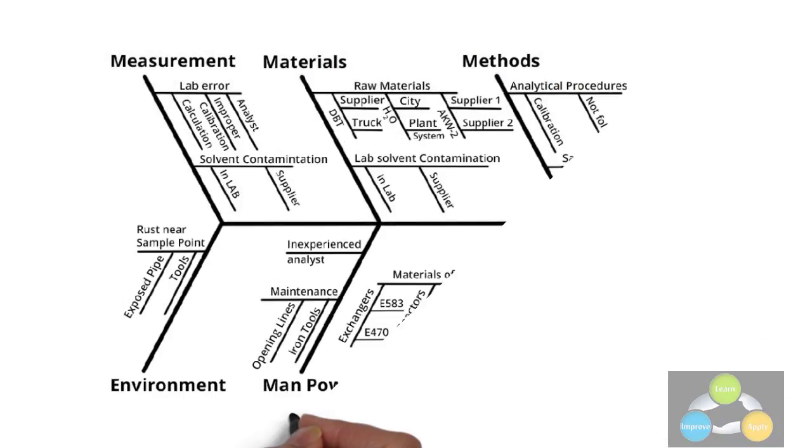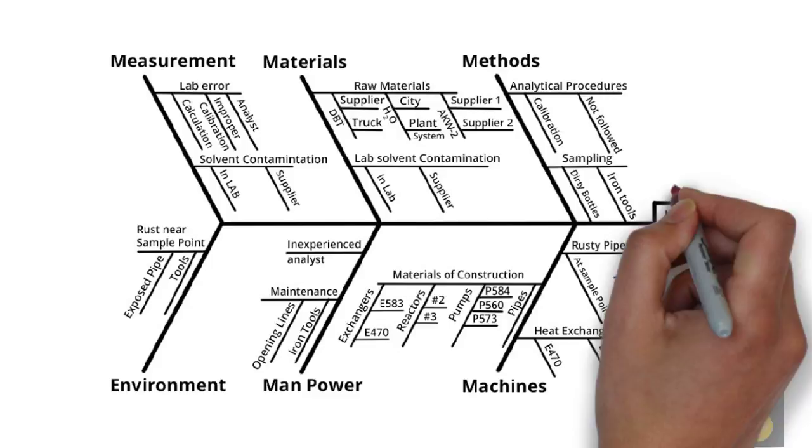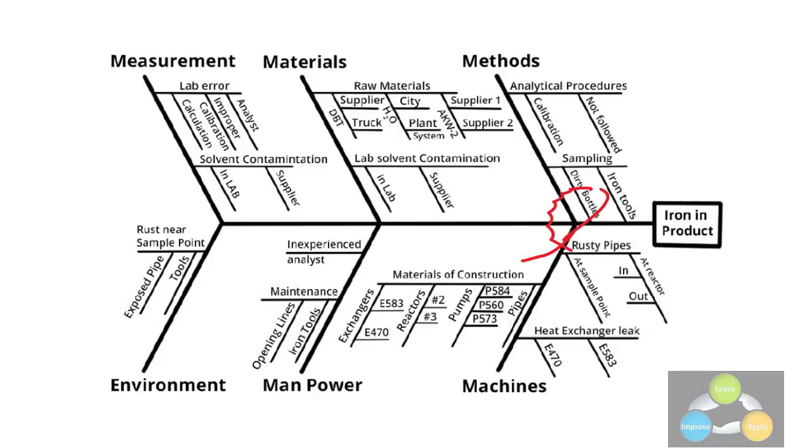The effect is shown as a fish shape facing to the right, with the causes extending to the left as fishbones. The ribs branch off the backbone for major causes with sub-branches for root causes to as many levels as required.